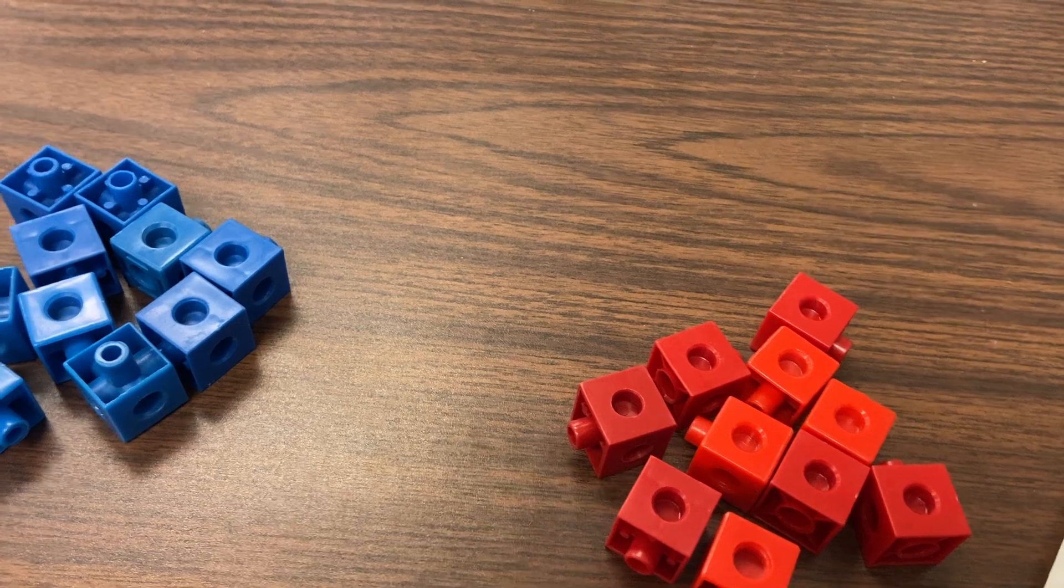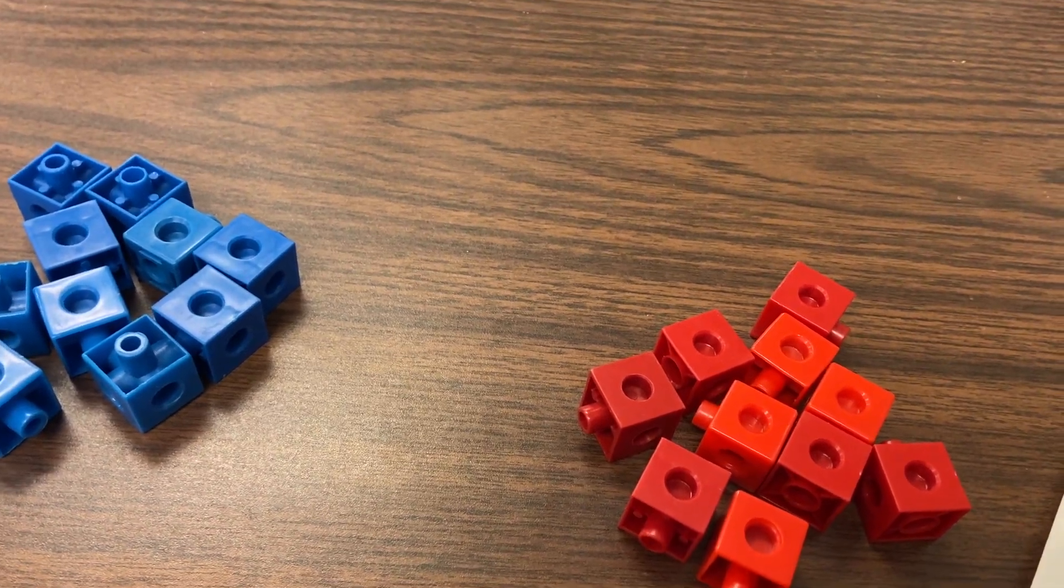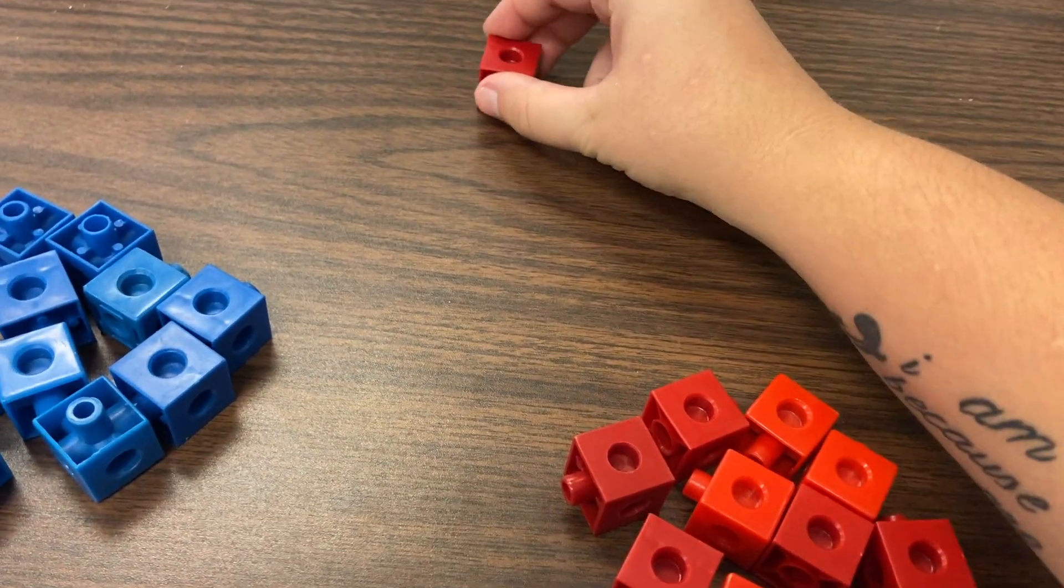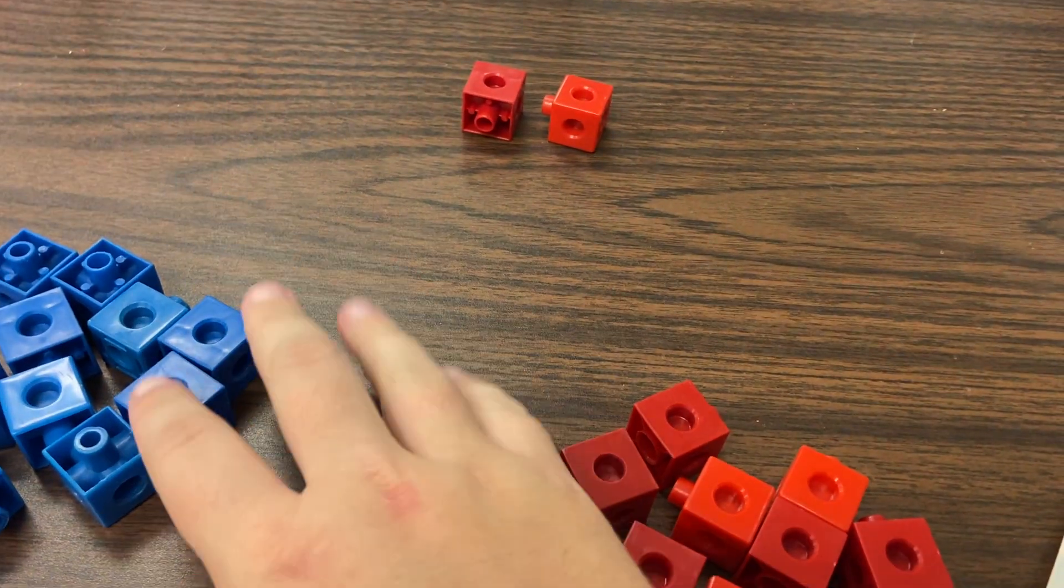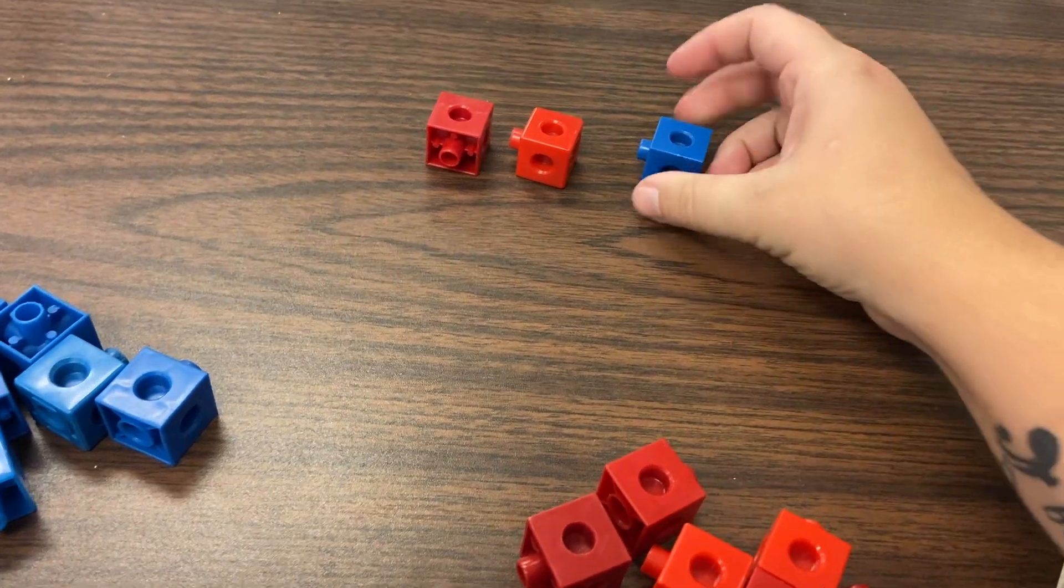Let's all add with our squares. Put out two red squares, one, two. Put one blue square with them, one.